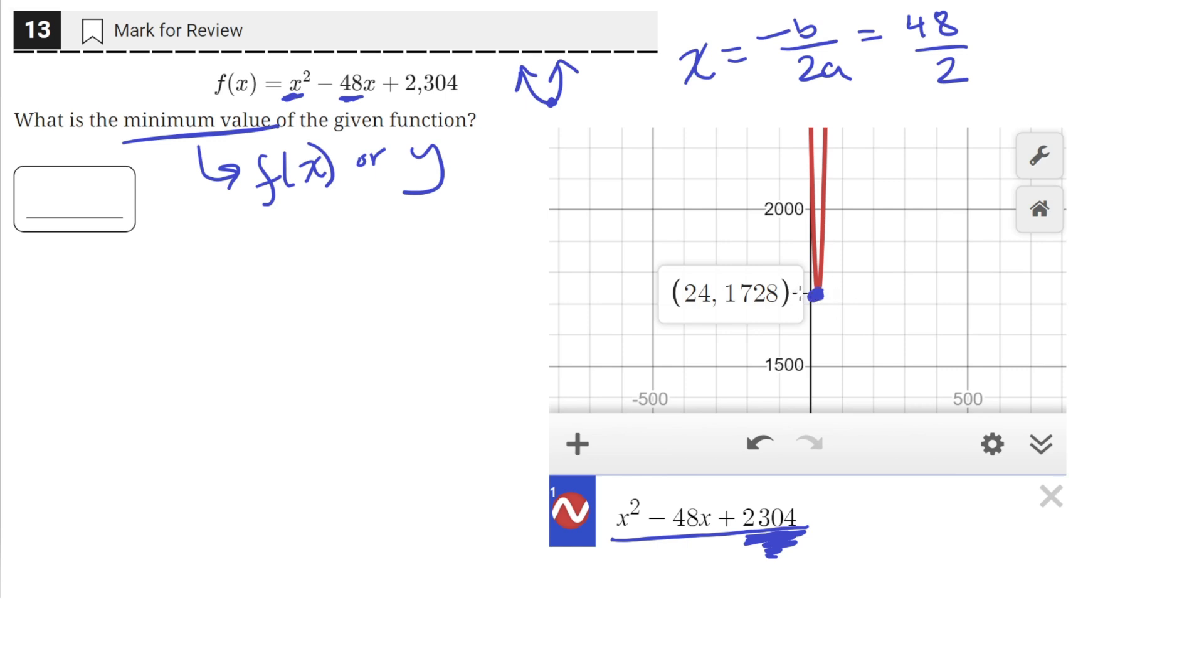Once you do, you can just select the bottom point on Desmos. Just click on it and it'll tell you the coordinates of the vertex. The vertex has an x value of 24.